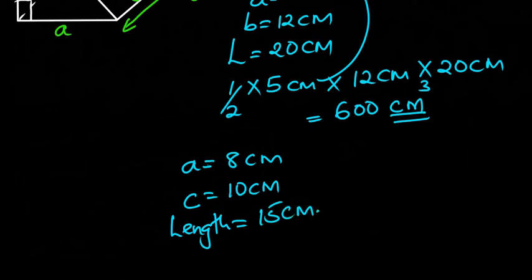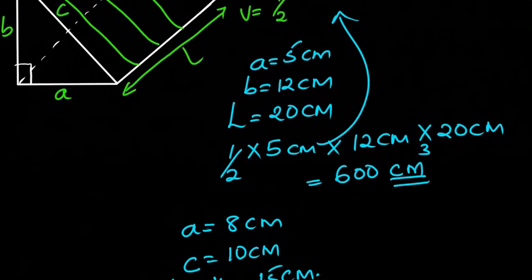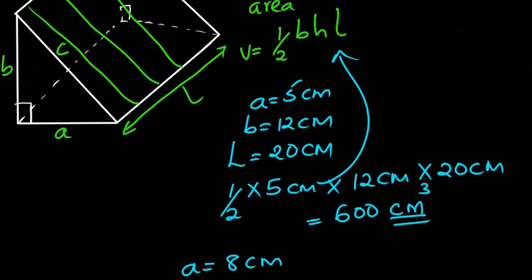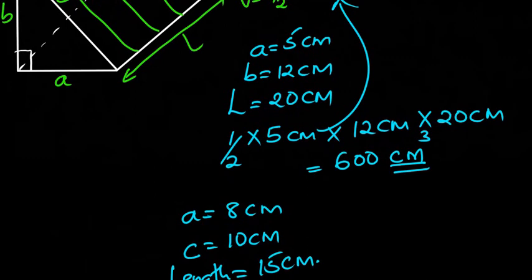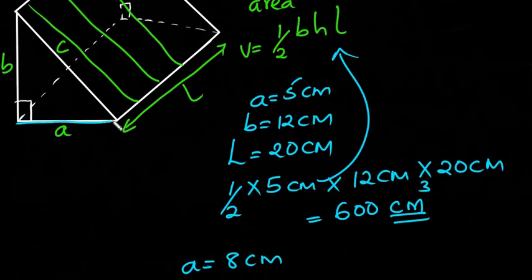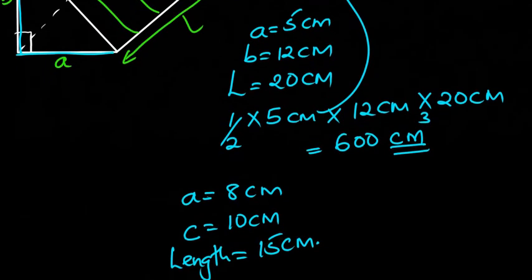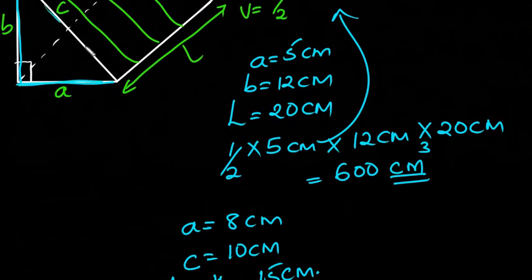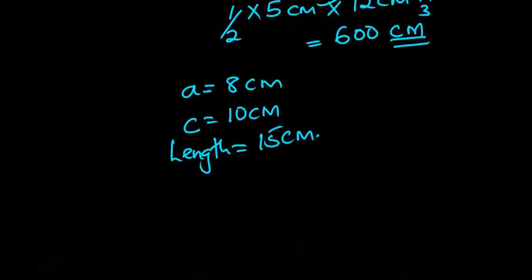So we need to go back to our formula. So it's the area of the triangle times the length of the prism. So to find the area of the triangle, we need this length and this other length. But the measurements that we have are only for this one and this one. So what do we do to get the value of the length B? So we're going to use the Pythagoras theorem to evaluate or to get the value of the length B.